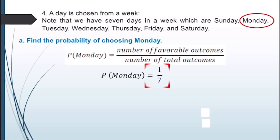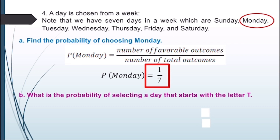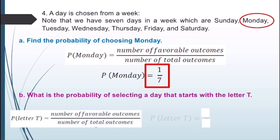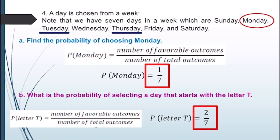For the second question: what is the probability of selecting a day that starts with the letter T? From the seven days — Sunday, Monday, Tuesday, Wednesday, Thursday, Friday, Saturday — only Tuesday and Thursday start with the letter T. Therefore, the favorable outcome is 2. The total outcomes is 7. So the probability of selecting a day starting with T is 2/7.